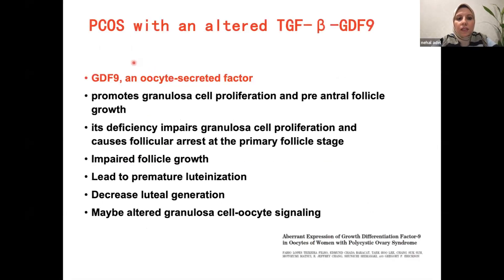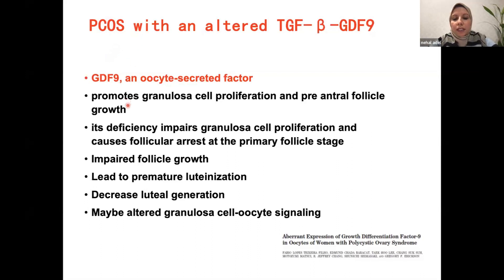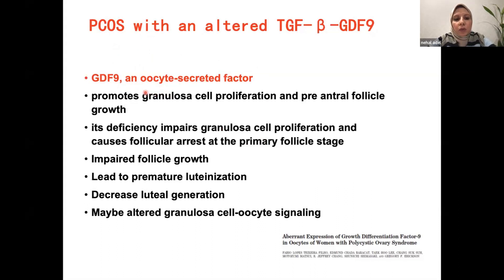Many studies have tried to investigate the role of different molecular mechanisms in PCOS patients. PCOS patients are associated with compromised gene expression of many growth factors and cytokines. One study examined the effect of growth differentiation factor 9 (GDF9) and tumor growth factor beta. Both factors are associated with the proliferation and differentiation of follicular cells. GDF9 is an oocyte-secreted factor that promotes granulosa cell proliferation and pre-antral follicular growth.